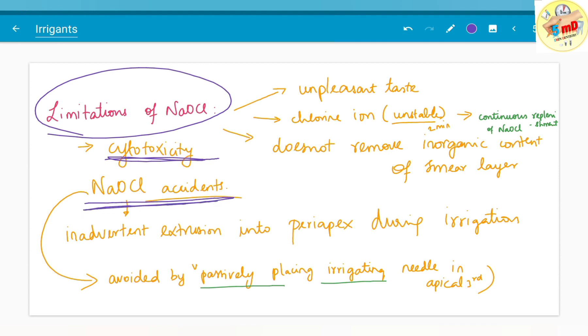To prevent this, we can use side-vented needles where the vent is on the sides rather than the open end. This helps solution pass through side vents and prevents extrusion beyond the periapex. Accidents are also prevented by passively placing the irrigating needle in the apical third and not forcing it.